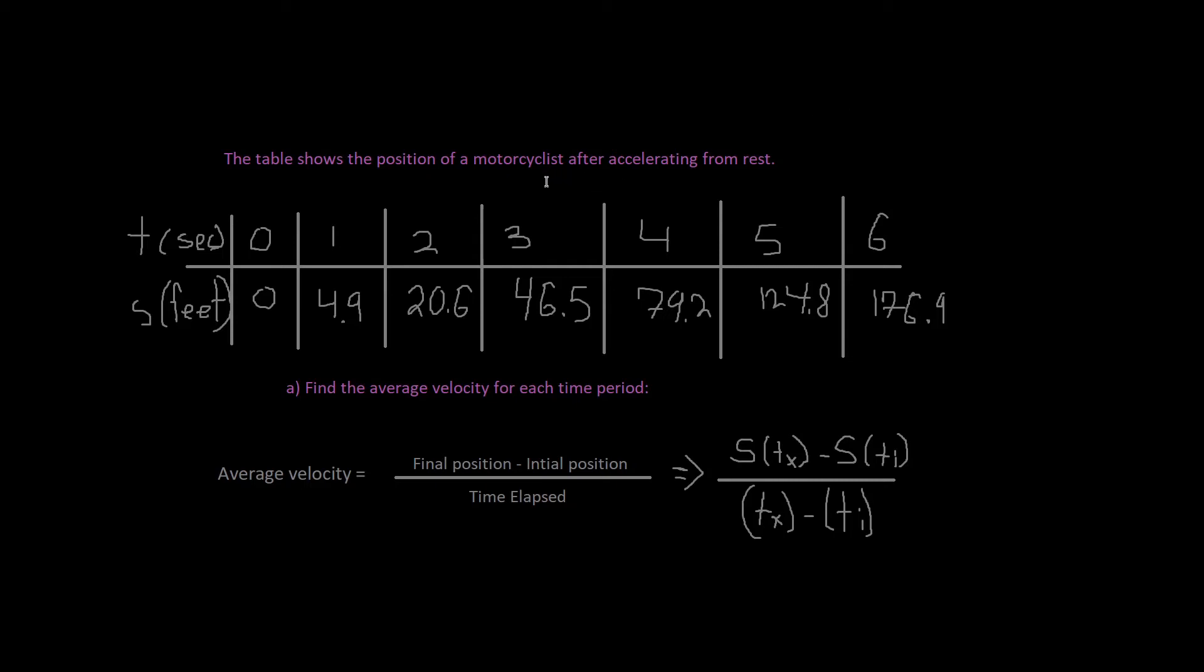The table shows the position of a motorcyclist after accelerating from rest. So we have our table of values right here. The question says find the average velocity for each time period.